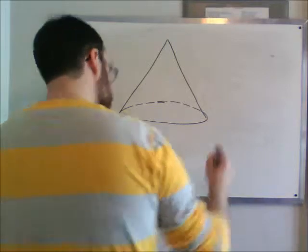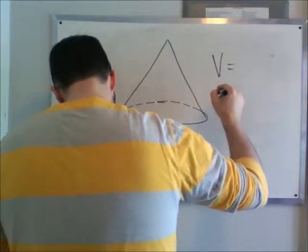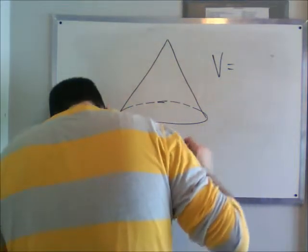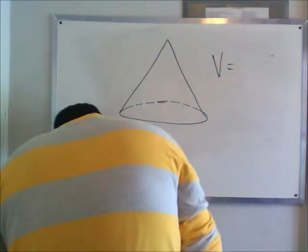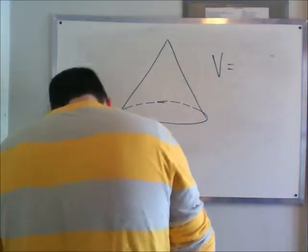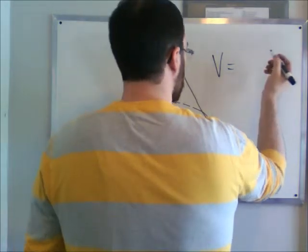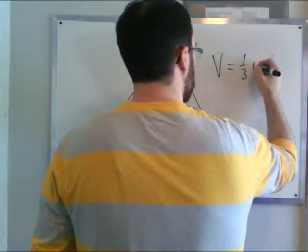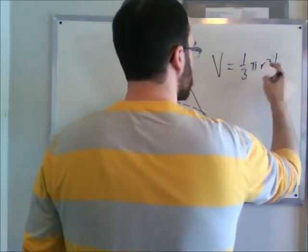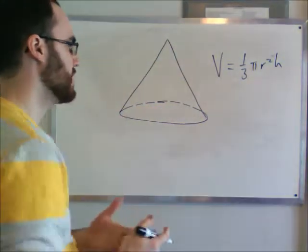The volume of this is going to be one-third pi r squared h. The reason it's squared here is because height is the third dimension.